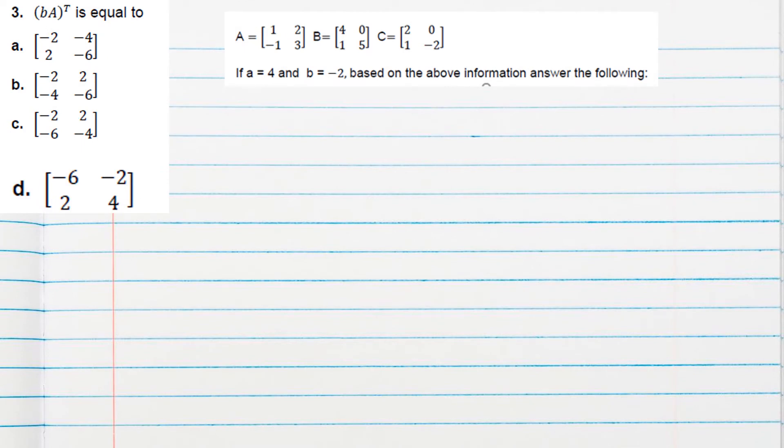Question number three: (bA)^T is equal to what? b value is given as -2 times A transpose. So we can multiply -2 with the matrix and then we can take its transpose. -2 times the matrix gives us the product, and the transpose of this will be [-2 -4; 2 -6].